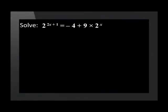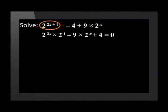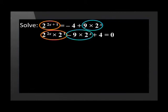That wasn't too bad. Let's do another one. Solve: 2 to the power of 2x plus 1 is equal to negative 4 plus 9 times by 2 to the power of x. There are three terms in this equation, which should make us think of solving a trinomial. Let's start by moving all the terms to the left of the equal sign. 2 to the power of 2x plus 1 can be split up to 2 to the power of 2x times by 2 to the power of 1. When plus 9 times 2 to the power of x is moved over, it becomes minus 9 times 2 to the power of x, and minus 4 becomes plus 4, equal to 0.